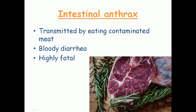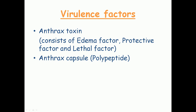The third and least common form is intestinal anthrax. One can get this infection by eating contaminated meat that is not cooked properly or if the meat is contaminated with bacteria or spores. The main manifestation is bloody diarrhea, and this can be very fatal — it is one of the most fatal forms of anthrax.